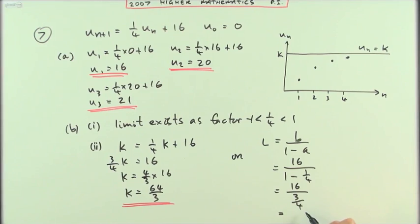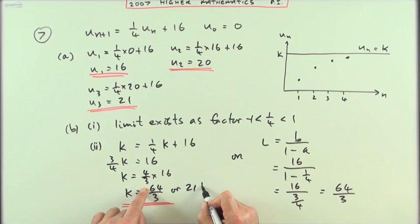Either way, 4 times the top, 4 times the bottom. 4 times the top, I'll have to put it here, 64. 4 times the bottom knocks out the 4, that's the whole point, which again gives you 64 upon 3, or if you like, 21 and a third.